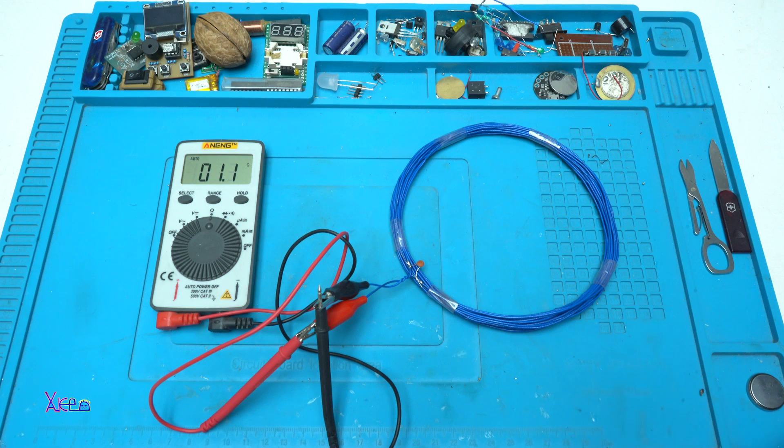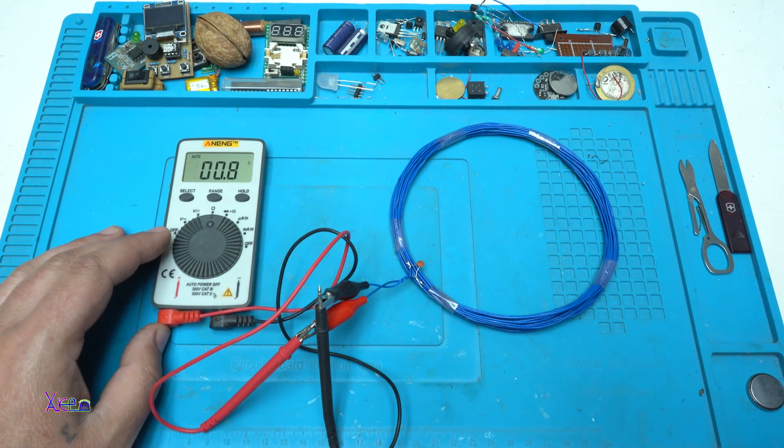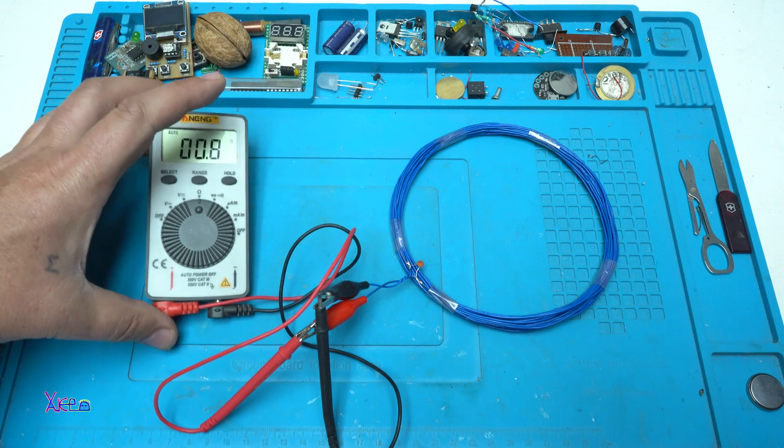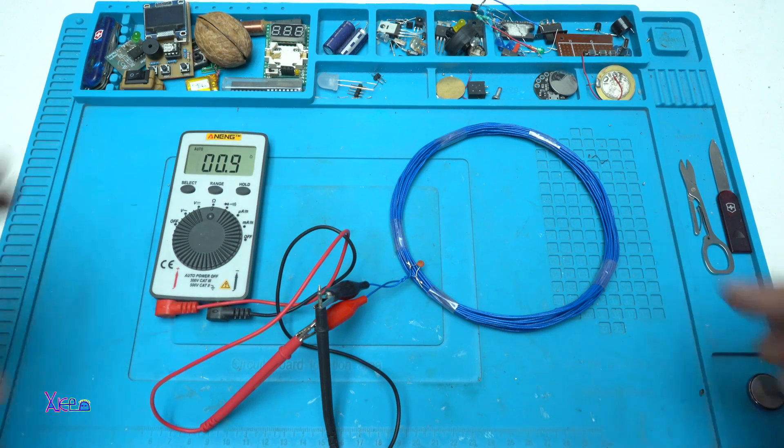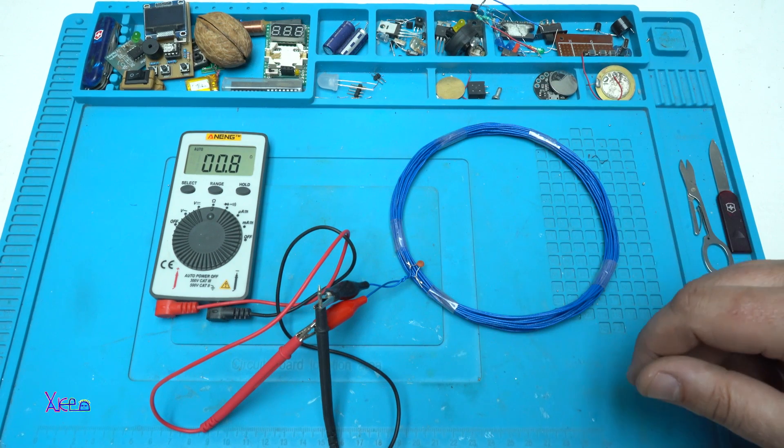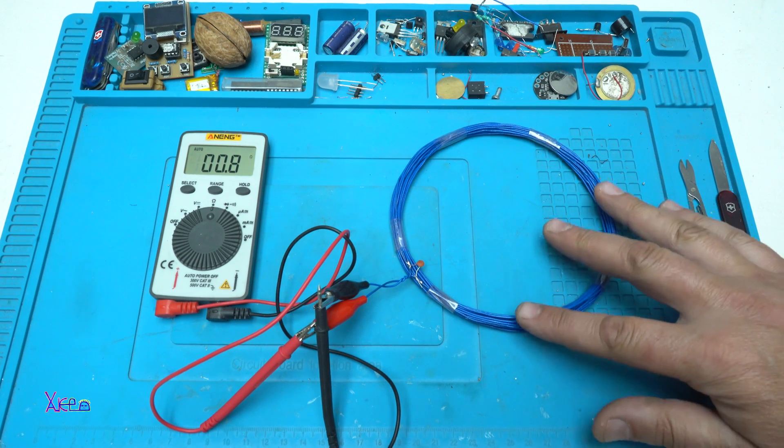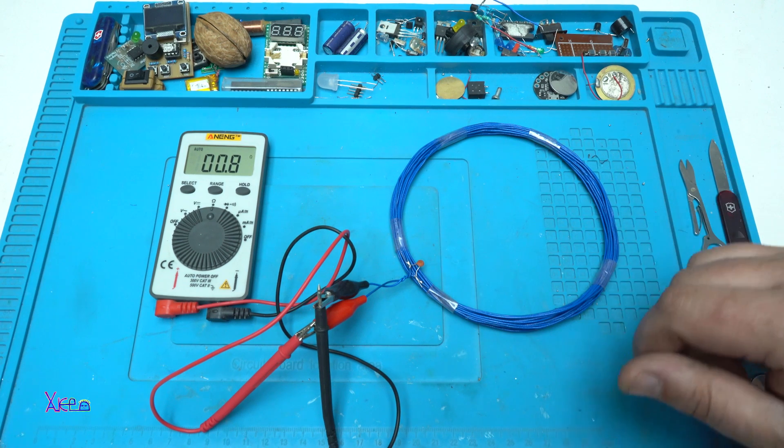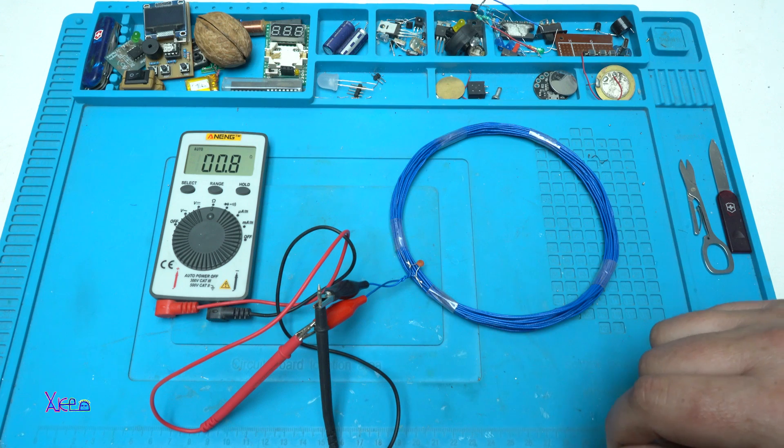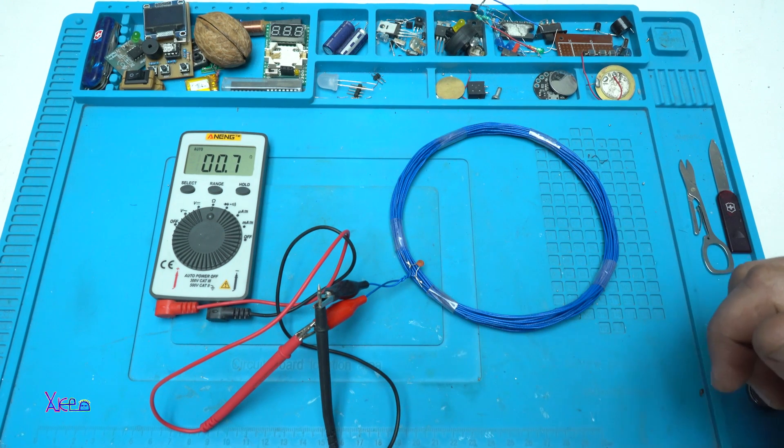Yep working fine. That was all for today's video on how to make a simple metal detector using a digital multimeter and a coil made out of solid wire with 12 centimeters diameter. Thank you for watching, please like the video, share and subscribe to my channel. See ya.